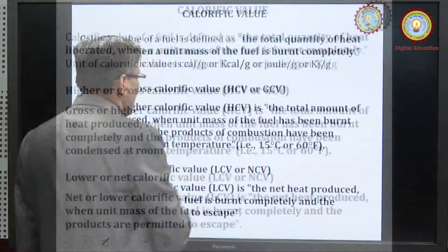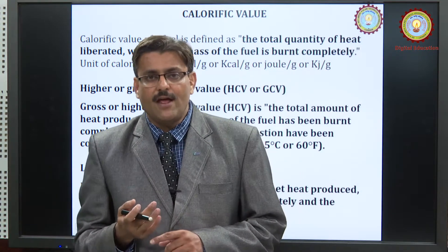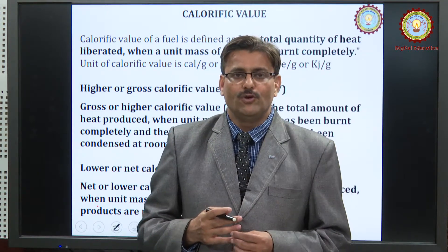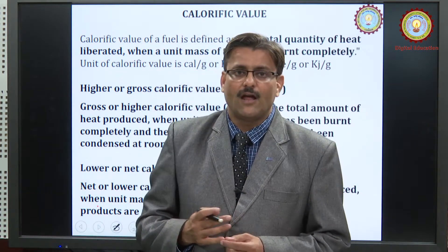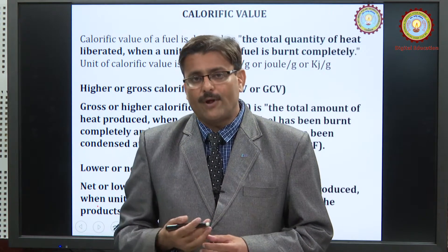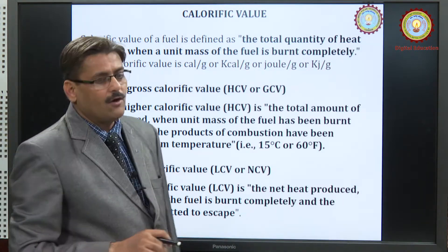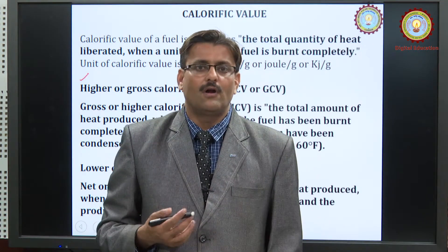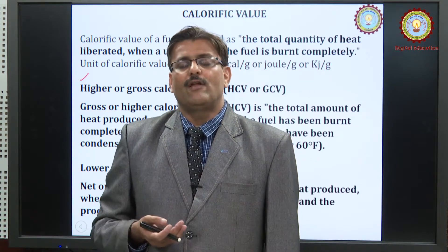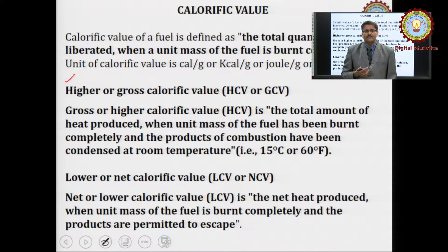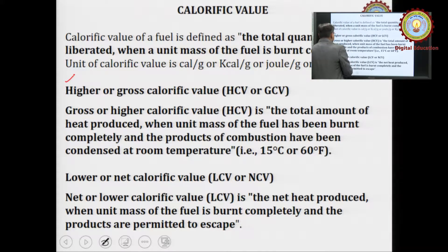Calorific value is defined as the quantity of heat liberated on complete combustion of unit mass of a substance. The units are calorie per gram, joule per gram, kilocalorie per gram, or kilojoule per gram. There are two types: higher or gross calorific value (GCV), and lower or net calorific value (NCV). When a fuel is burnt, if the volatile substances are condensed and the latent heat is added to the net calorific value, that gives the gross calorific value. Net calorific value is always lower and gross calorific value is always higher.